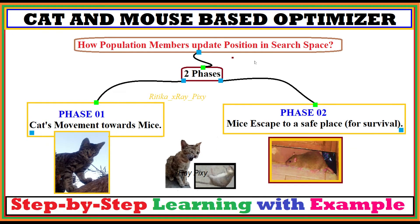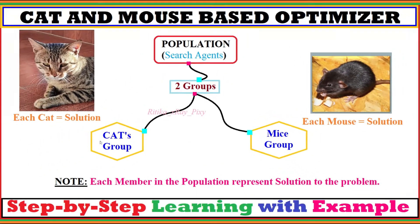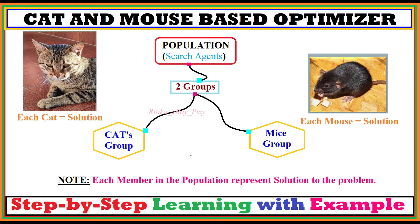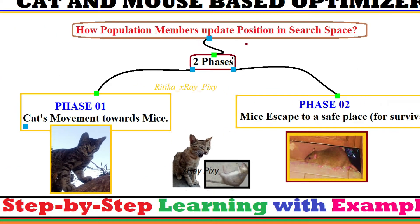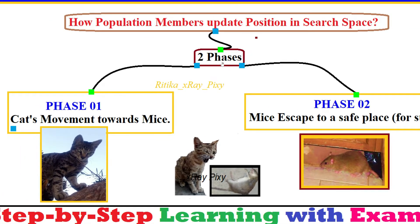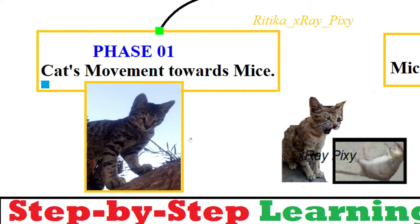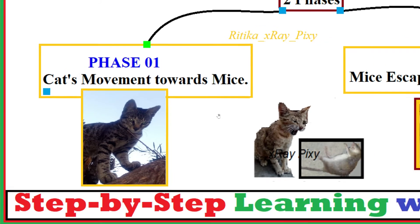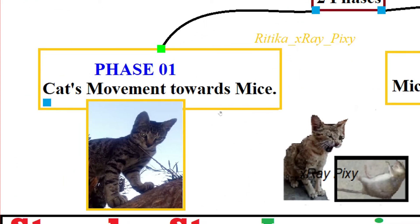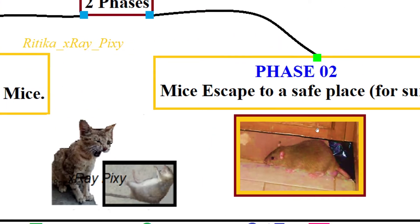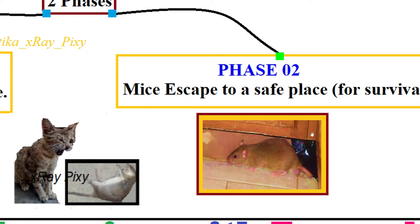To update the position of search agents in the search space, since the population is divided into two groups, we update positions in two phases. In the first phase, we calculate the cats' movement towards the mice and update the cats' positions. In the second phase, we calculate the mice movements and update the positions for the mice.